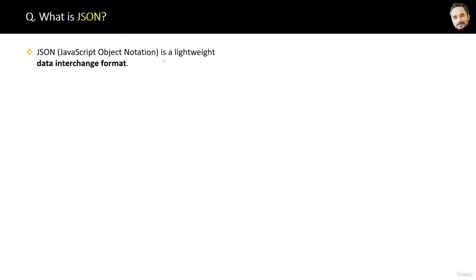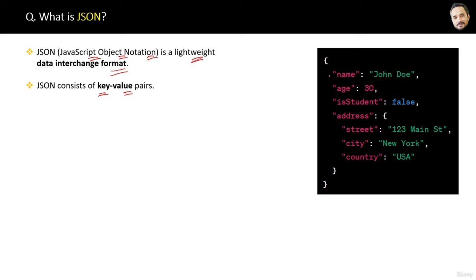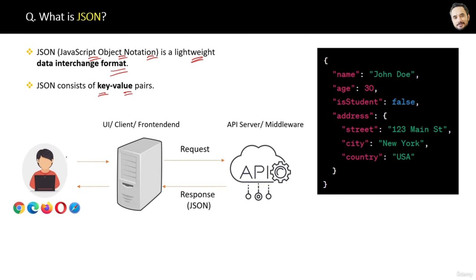What is JSON? JSON stands for JavaScript Object Notation and is a lightweight data interchange format consisting of key-value pairs. It is used to exchange data between web APIs. When you send a request to an API, the API typically sends back the response data in JSON format. JSON is the language by which the UI and web API communicate. Other formats like XML exist, but JSON is very popular today because it is simple to understand.